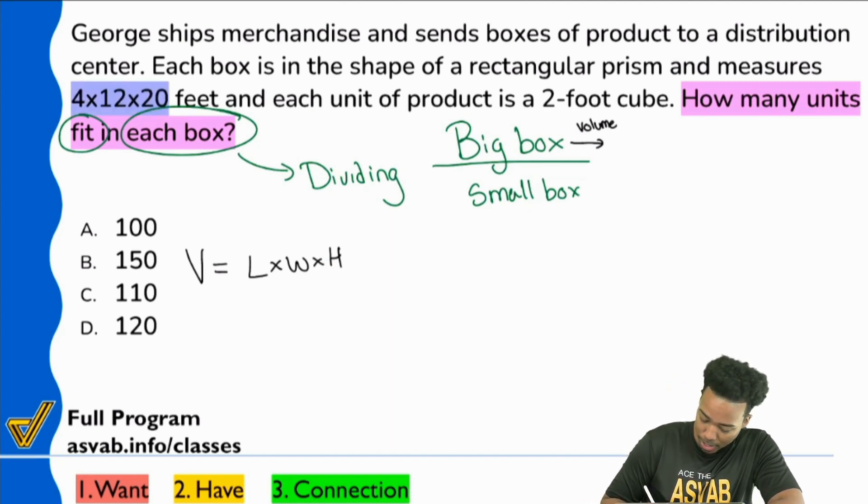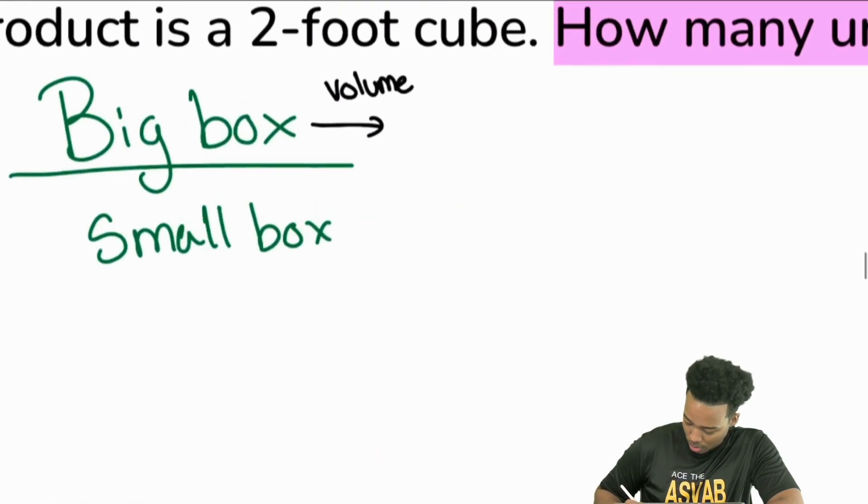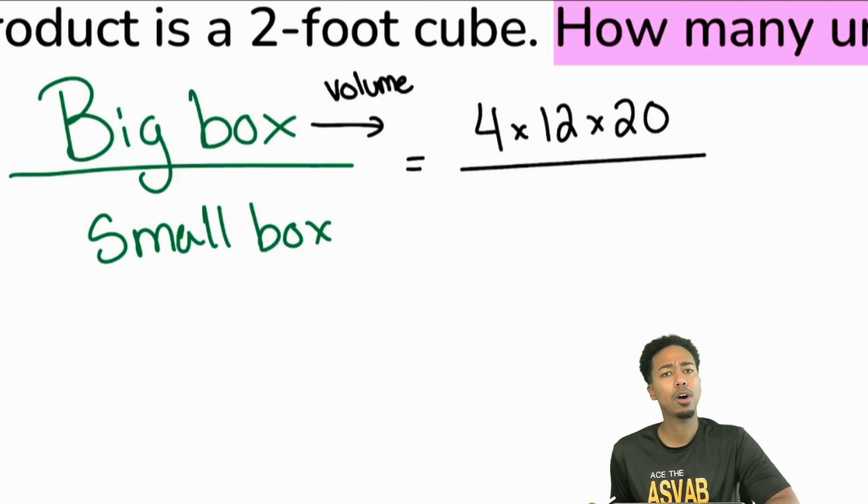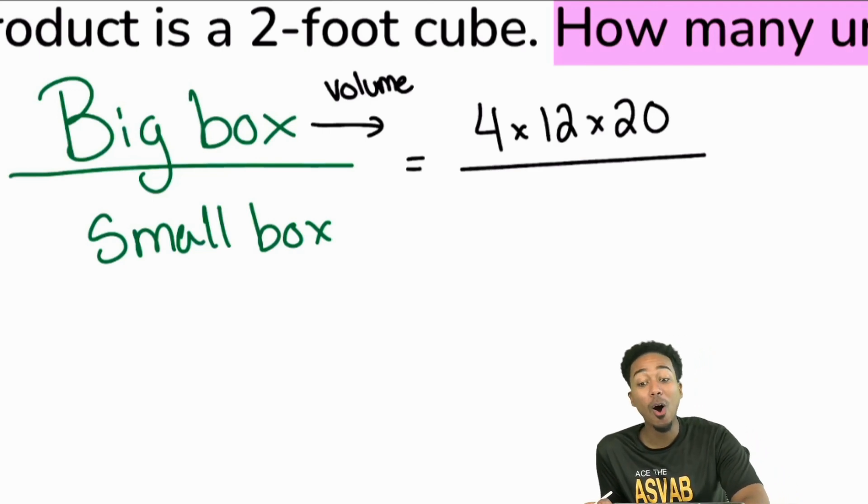That's right, Stephanie, length times width times height. So if we go for that here, check it out, we got 4 by 12 by 20. So we'll go ahead and do that here. We got 4 times 12 times 20. Then for the small box, everybody, what are the dimensions of the small box? What's the length? What's the width? What's the height of a two-foot cube? Yeah, it's going to be all twos there. It's all going to be two.